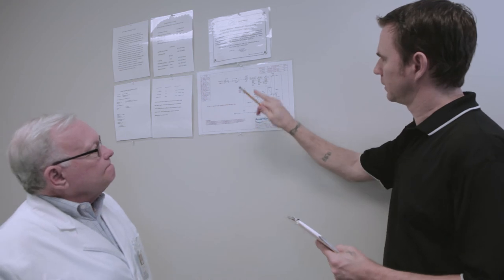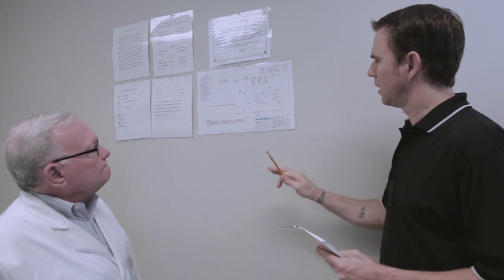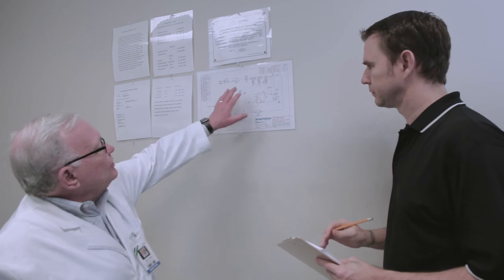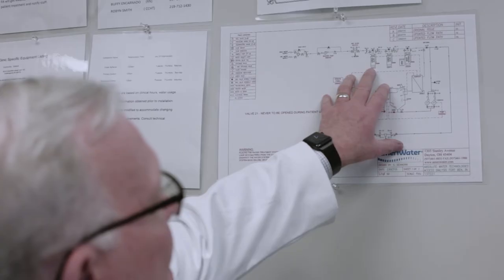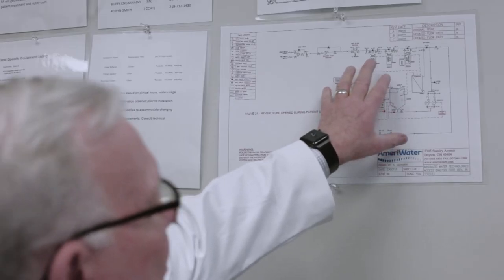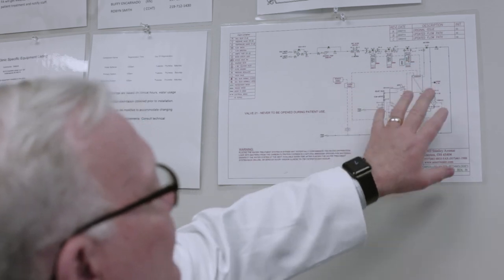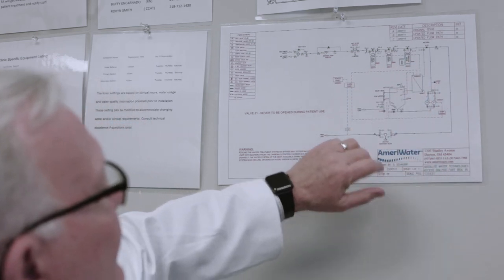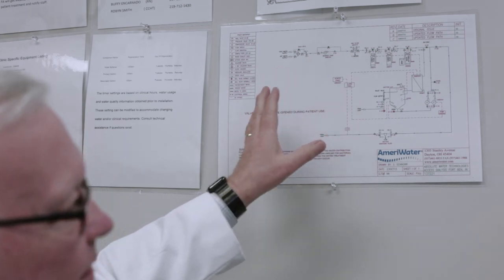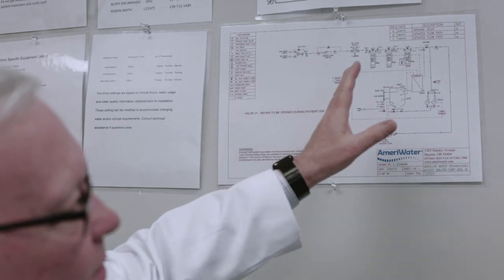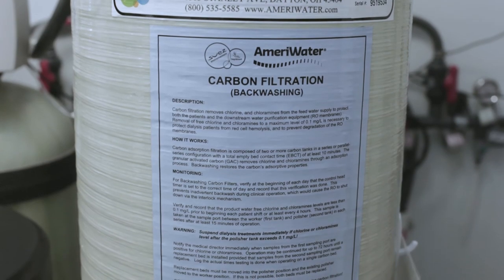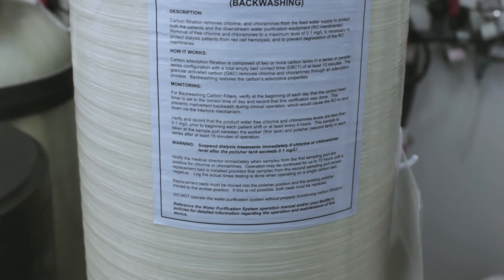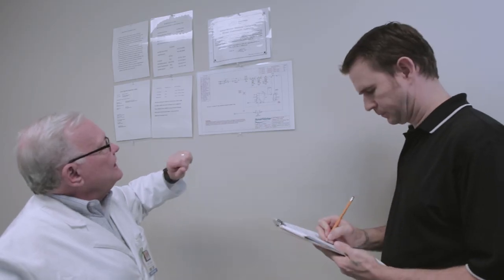Are there any other labeling requirements beyond the schematic and tags? Yes — each component has to have a label saying what it is, like 'carbon filter,' 'water softener,' 'reverse osmosis system,' or 'storage tank.' In addition, there's a CMS label on all major components that tells us what it is, how you monitor it, and what you do if something is wrong.